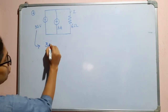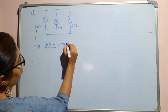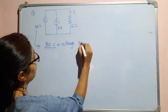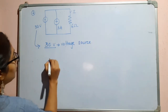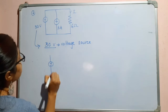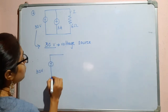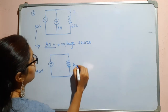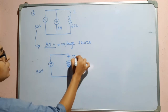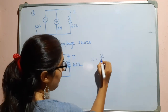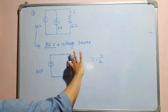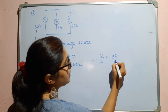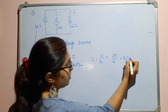Considering the 30 volt voltage source, we will redraw the circuit. The current source is made open, leaving the 30 volt source and the 6 ohm resistor. The current I is equal to V divided by R, which is 30 divided by 6, giving 5 amperes.